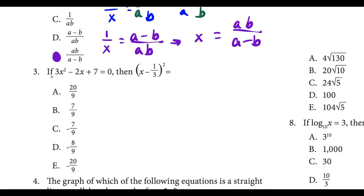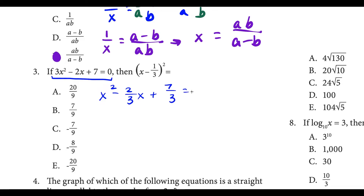For question three, we have this equation and we want to find the value of x minus one third, squared. We could try to factor this and find the roots, or try the quadratic formula. But one thing that's jumping out is if we take that equation and divide everything by 3, we would have x squared minus 2/3 x plus 7/3 equals 0. This looks like completing the square.